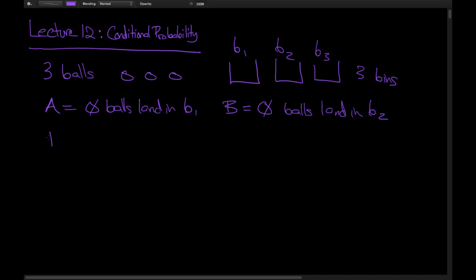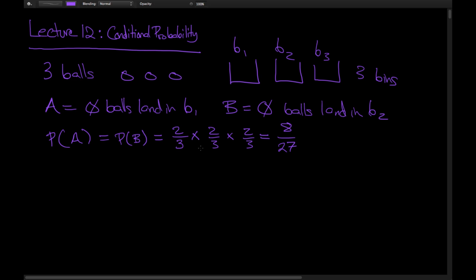It's fairly straightforward to calculate the probability of A happening, and this is also equal to the probability of B happening because neither A nor B is privileged over the other. Having zero balls in one bin is essentially the same as zero balls ending up in another. There's a two-thirds chance each ball doesn't end up in a given bin, so the probability comes out to 8 over 27.